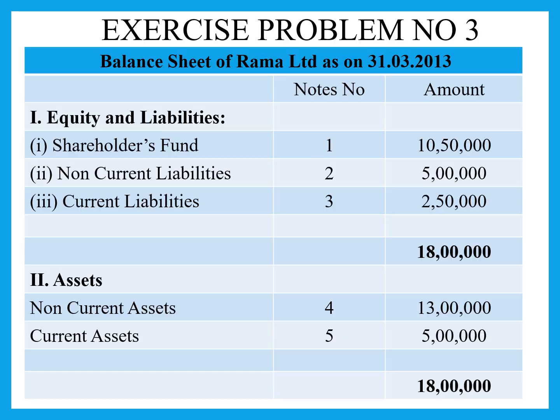So total current assets is 5 lakh rupees. As per the balance sheet, the grand total on the liabilities side: shareholders fund is 10 lakh 50,000 rupees (working note 2), non-current liabilities is 5 lakh rupees (working note 3), and current liabilities is 2 lakh 50,000 rupees — giving a grand total of 18 lakh rupees. On the assets side, non-current assets (working note 4) is 13 lakh rupees, and current assets (working note 5) is 5 lakh rupees — also totalling 18 lakh rupees. Therefore, assets and liabilities are balanced.